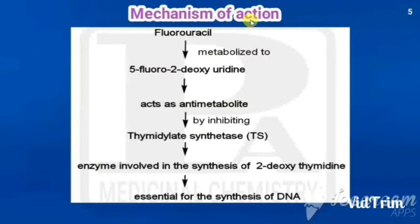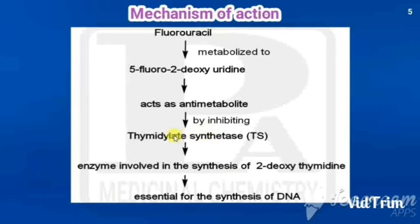The mechanism of action of 5-fluorouracil: 5-fluorouracil is metabolized into 5-fluoro-2-deoxyuridine, and this metabolite acts as an anti-metabolite by inhibiting the enzyme thymidylate synthase. Thymidylate synthase is the enzyme involved in the synthesis of 2-deoxythymidine, which is essential for DNA synthesis.